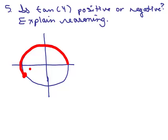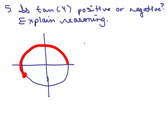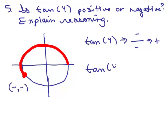And so to get the tangent of a function, we have to do the y over the x of this ordered pair. So what's important here is that the x value is negative and the y value is also negative. So the tangent of 4, I know that it's going to be the y value, which is going to be negative, over the x value, which is negative. It's going to be a positive number. So the tangent of 4 is going to be greater than 0, and so it's going to be positive for that reason.